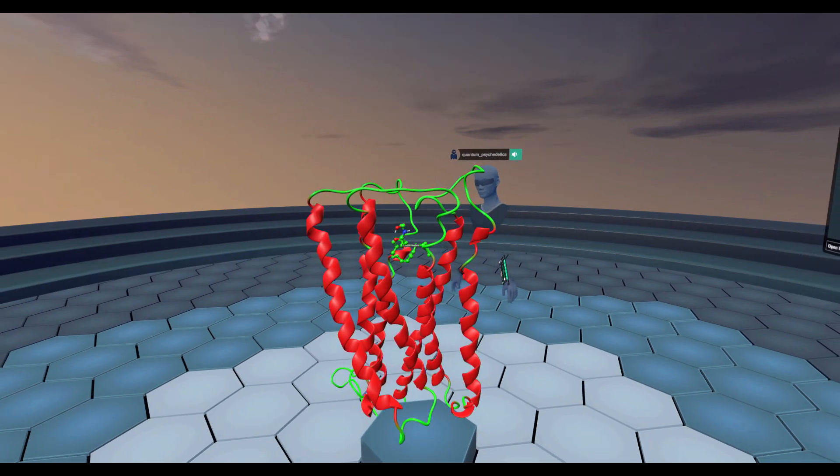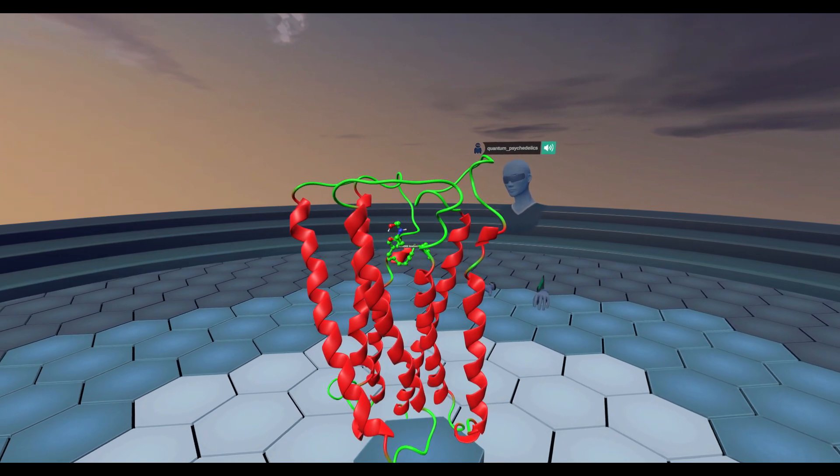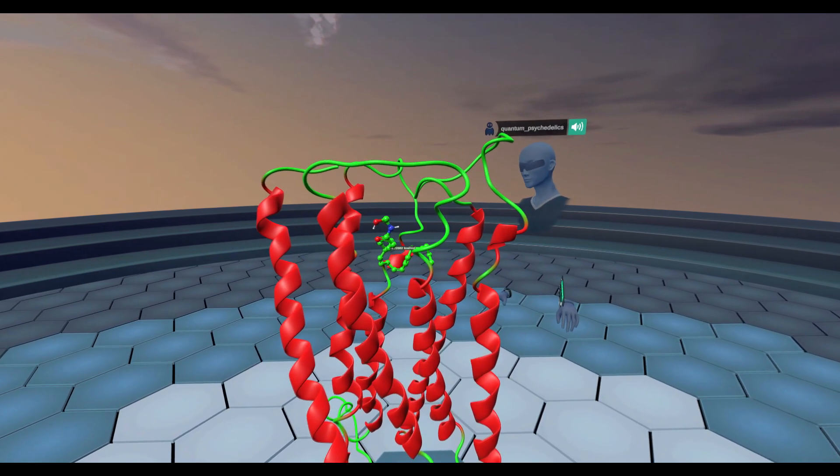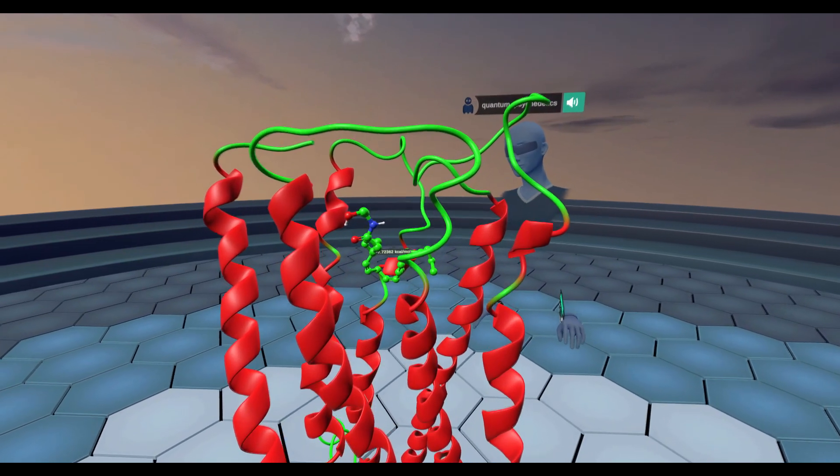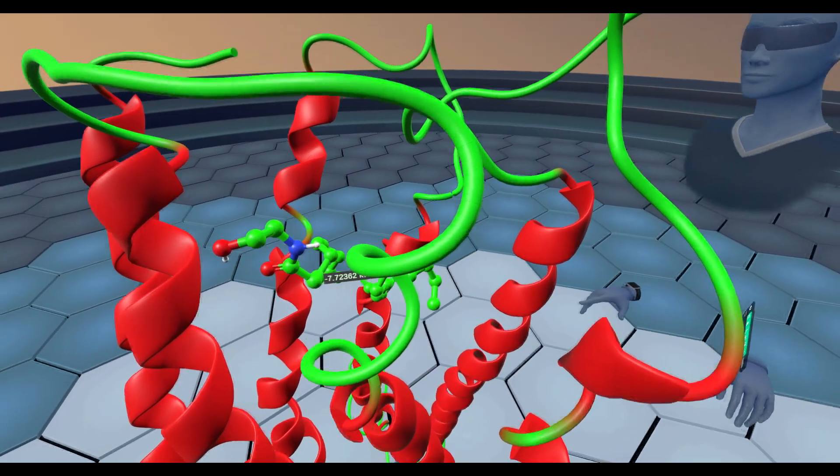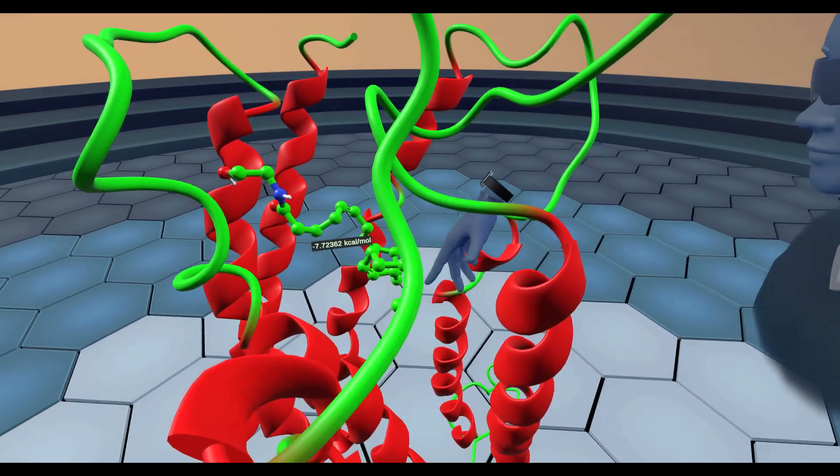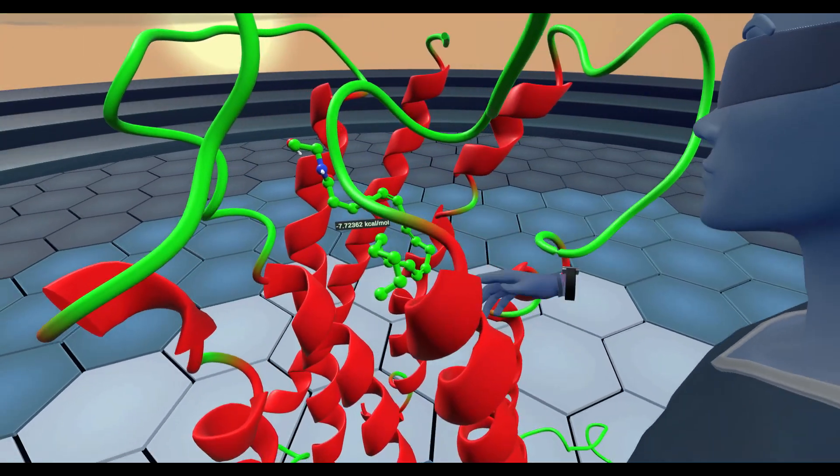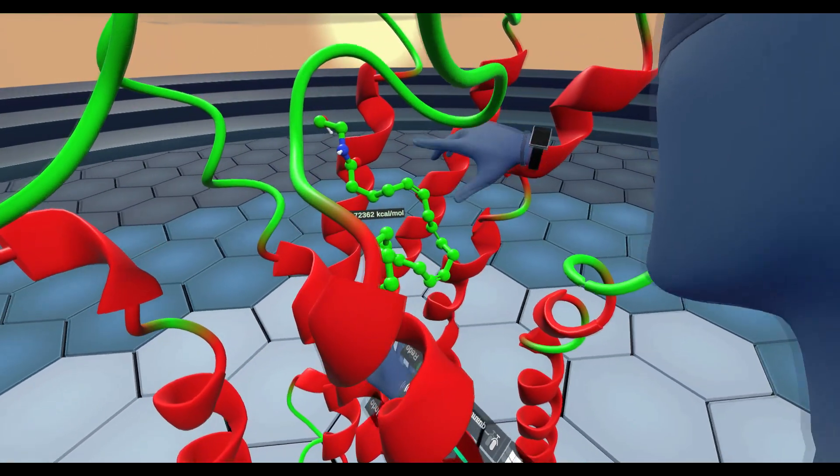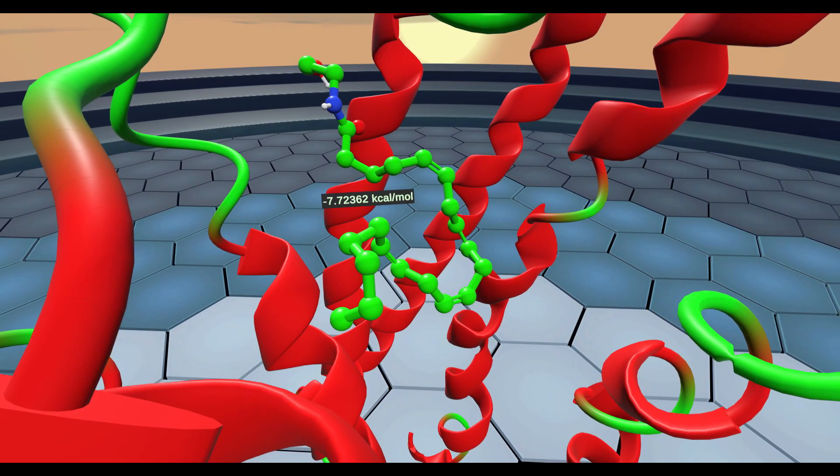This is the docked pose of anandamide bound to CB-1 receptor. When I first learned about anandamide, I really thought, how is a molecule with that long of a carbon chain going to fit inside the orthosteric pocket of CB-1 receptor? But as we can see, it contorts itself into a bended snake-like structure to fit inside that orthosteric binding site, which I think is really unique and cool.